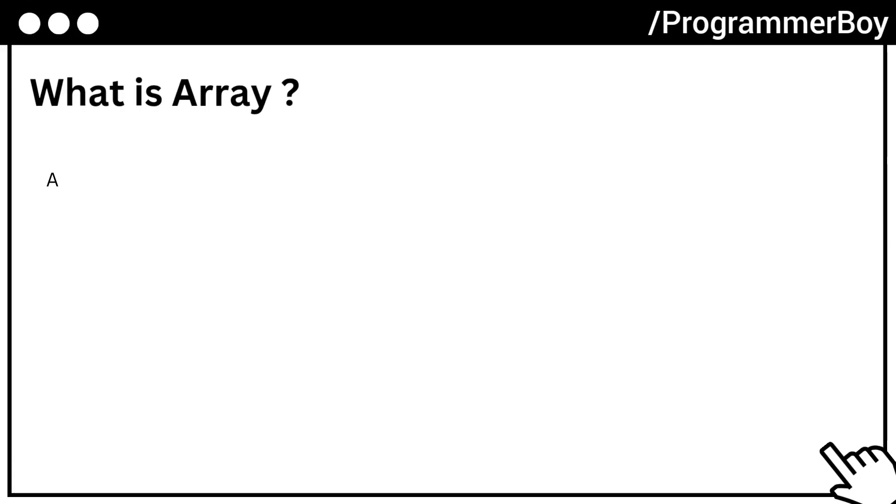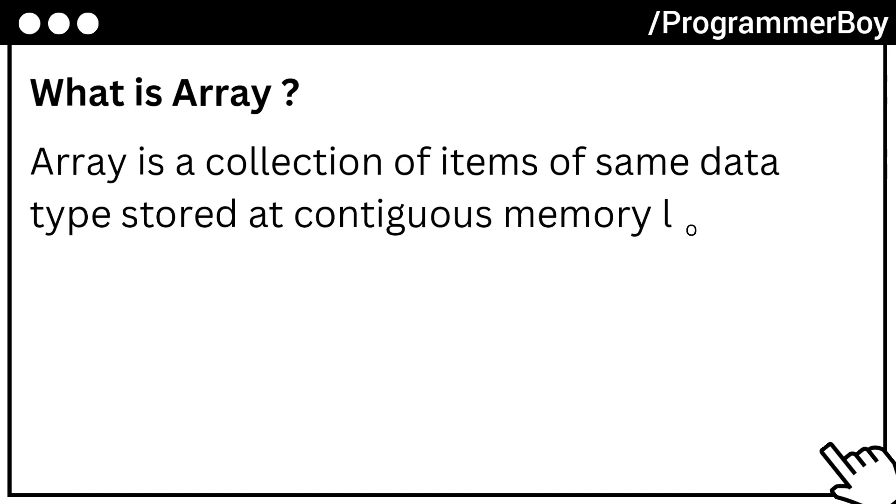What is array? Array is a collection of items of same data type stored at contiguous memory locations.